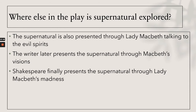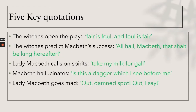The supernatural is also presented through Lady Macbeth talking to evil spirits, through Macbeth's visions, and through Lady Macbeth's madness. Key quotes: the witches open the play with 'Fair is foul, foul is fair.' The witches predict Macbeth's success — 'All hail, Macbeth, that shalt be king hereafter.' Lady Macbeth calls on the spirits — 'Take my milk for gall.' Macbeth hallucinates — 'Is this a dagger which I see before me?' Lady Macbeth goes mad — 'Out, damned spot, out, I say.'